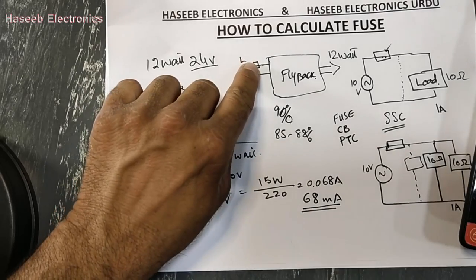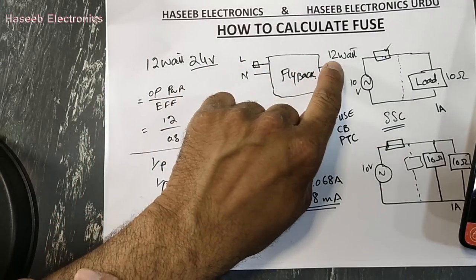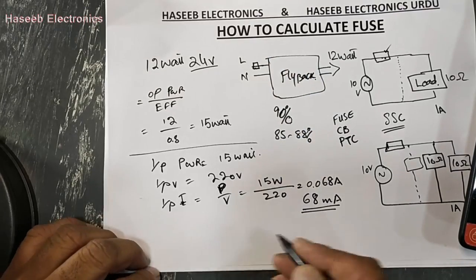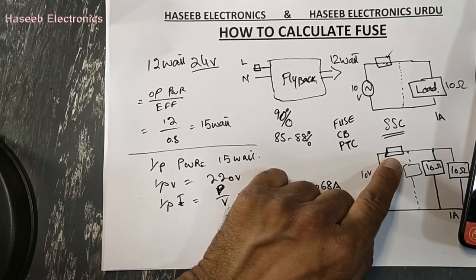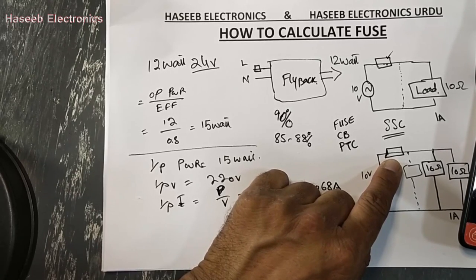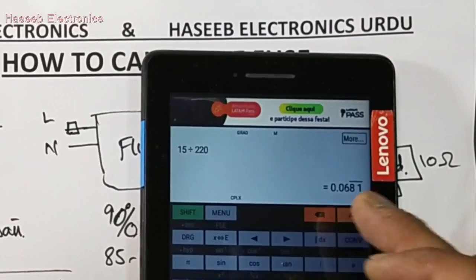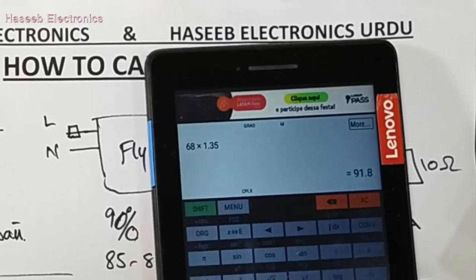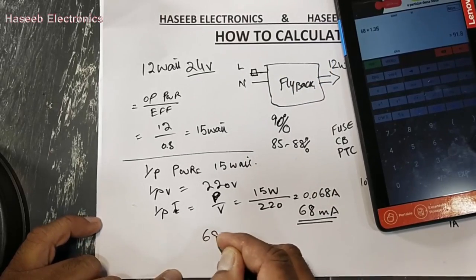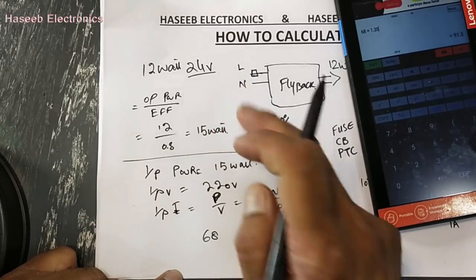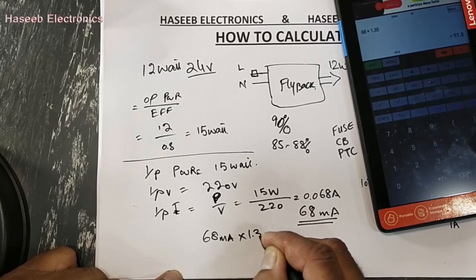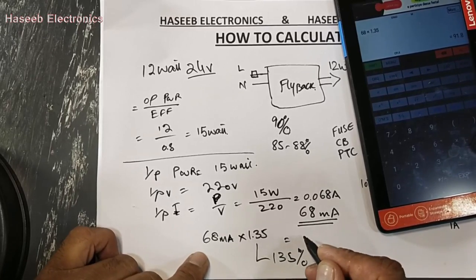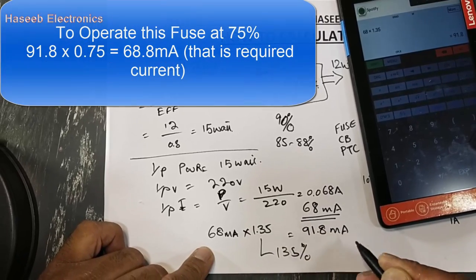Now when we select a fuse, the fuse will operate at about 75 percent of its total value. For easy calculation, take our 68 milliampere and multiply by 1.35 — that is 135 percent — giving 91.8 milliampere. This is the minimum fuse value we need to select.